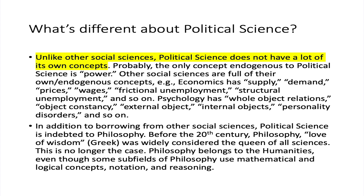In addition to borrowing from other social sciences, political science has also borrowed from philosophy. Before the 20th century, philosophy — which means love of wisdom in Greek — was widely considered the queen of all sciences. Obviously this is no longer the case; philosophy belongs to the humanities. But for the early development of political science, political philosophy was particularly important.